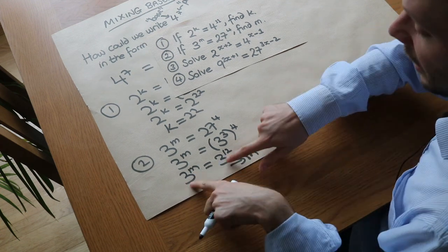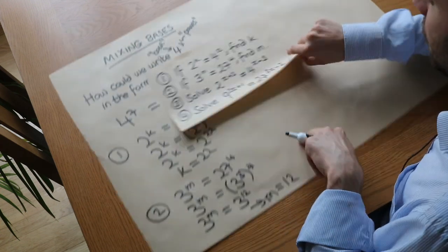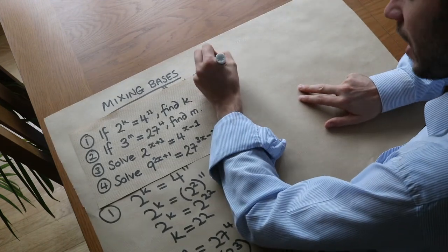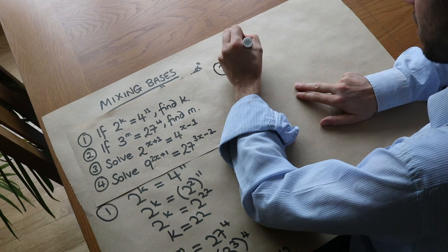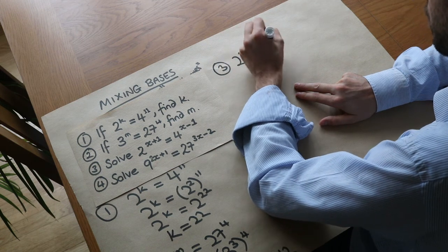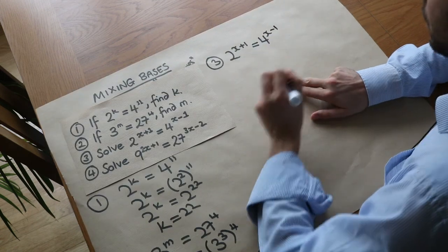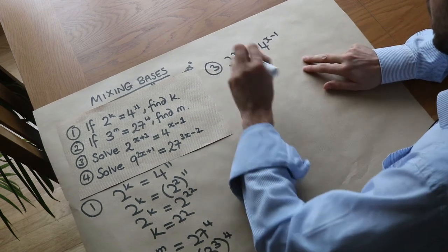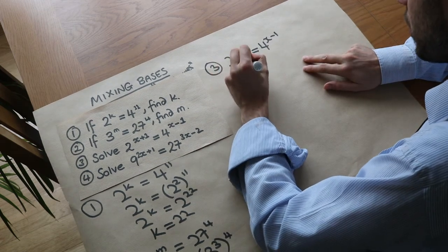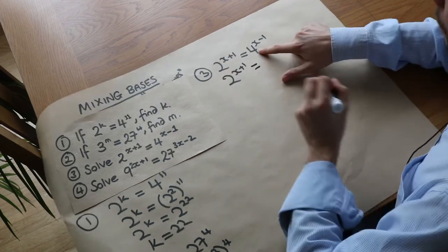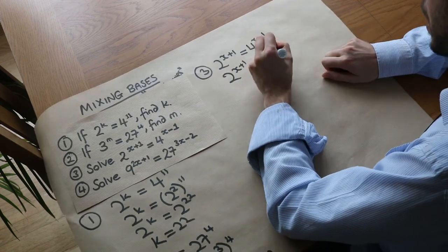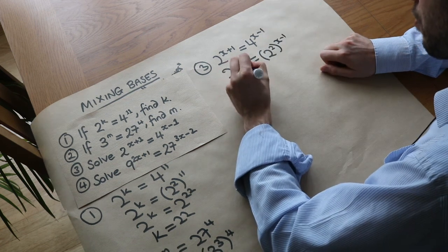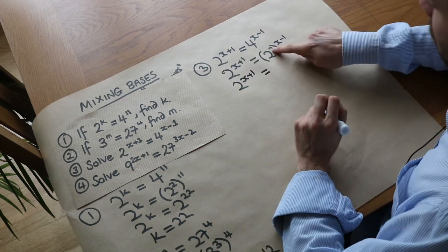We can also use this to solve equations. If we had 2^(x+1) = 4^(x-1), we want to have the same base so we can equate the powers. 2^(x+1) we'll keep as is, but the 4 we can replace with 2 squared in brackets to the (x-1). Let's simplify the right-hand side by multiplying these together.